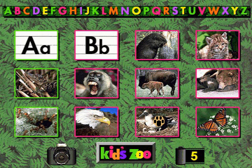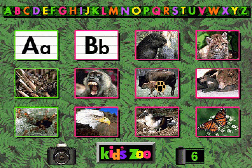Click on the striped cat that likes to eat jackrabbits. Bobcat. You're right. Click on the wild ox that looks like a big cow. Bison. You're right. Click on the big brown mammal that naps all winter. Brown bear. You're right. Click on the reptile who's related to a crocodile. Alligator. You're right.